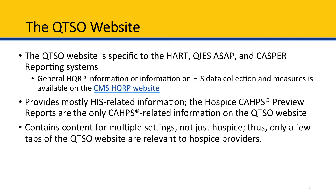Before we dive into the details, there are a few things to keep in mind about the QTSO website. First, this website will contain information pertinent to KEYS ASAP, HEART, and CASPER. For general HQRP information or information about completing HIS items, visit the CMS HQRP website, which is covered in Module 2 of this series.